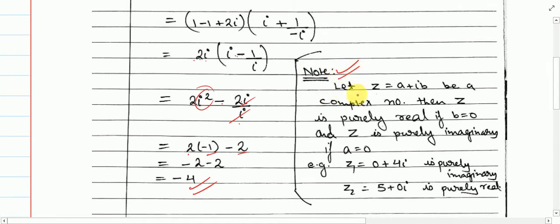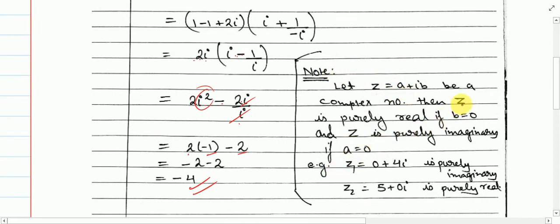Note this: if z = a + ib, the complex number is called purely real if b = 0, and purely imaginary if a = 0. For example, z₁ = 0 + 4i has a = 0, so real part is 0 — only imaginary is present, so this is purely imaginary. In the second example, b = 0, meaning imaginary part is 0, so it is purely real.